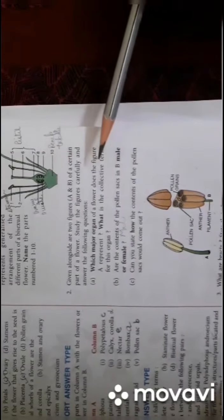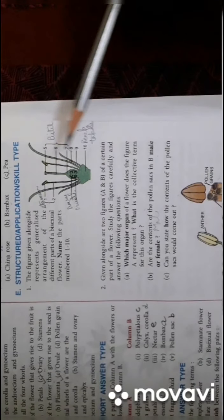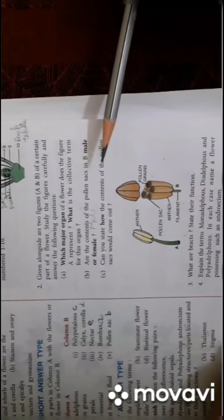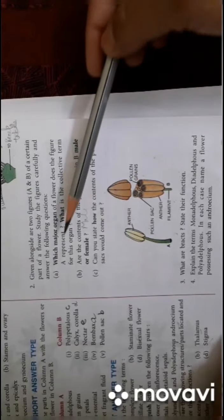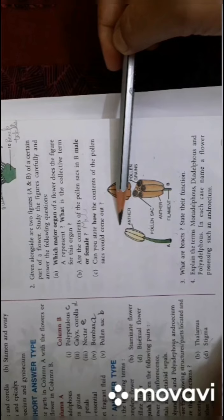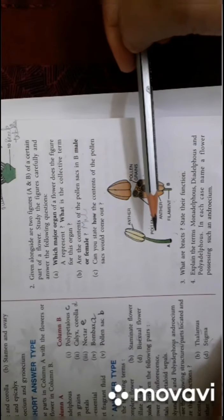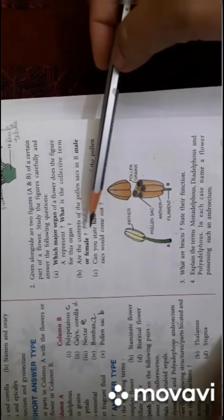These two questions you have to write yourself. This diagram you have done many times so you can write the answers. Given alongside is this figure, so you just tell me which major organ of flower does the figure A represent - it represents the stamen. And what is the collective term for this organ - androecium.